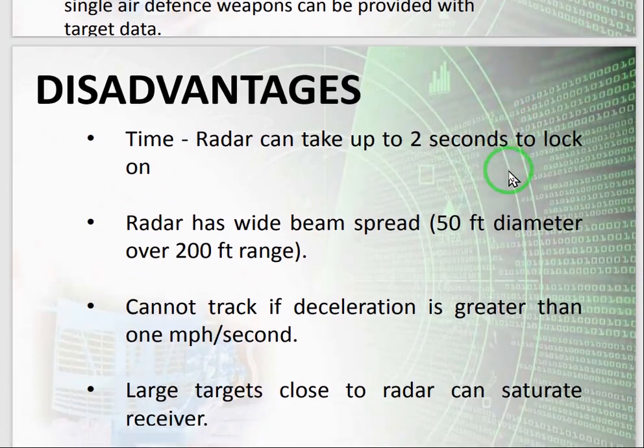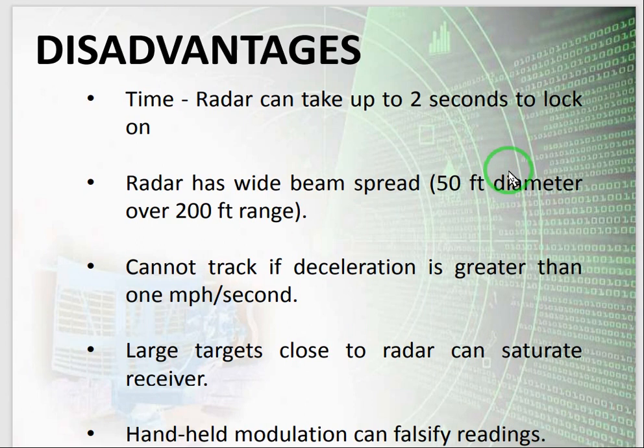There are also some disadvantages of this system. As time: radar can take up to 2 seconds to lock on. Radar has wide beam spread. It cannot track if deceleration is greater than 1 mile per hour per second. Large targets close to radar can saturate the receiver. Handheld modulation can falsify readings. There are advantages and disadvantages to all technologies, but the disadvantages are not as significant as the advantages.